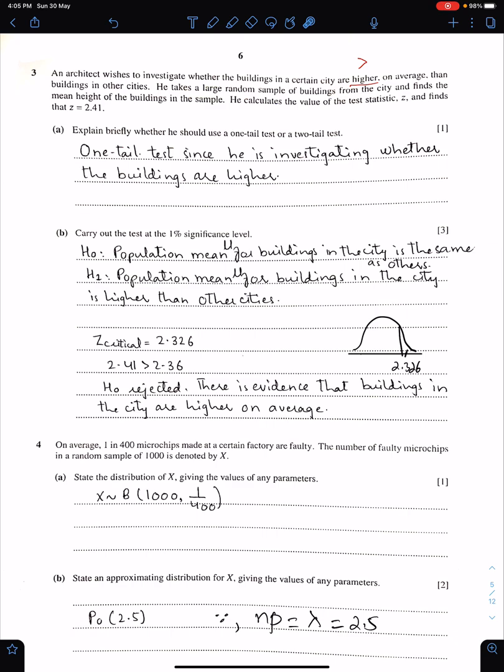Question number 3. An architect wishes to investigate whether the buildings in a certain city are higher. Higher means greater sign. That means he is looking for an increase in H1. Therefore, the test is upper tail, one tail and upper tail. On average, then buildings in other cities. He takes a large random sample of buildings from the city and finds the mean height of the buildings in the sample. He calculates the value of the test statistic Z and finds Z test is 2.41.